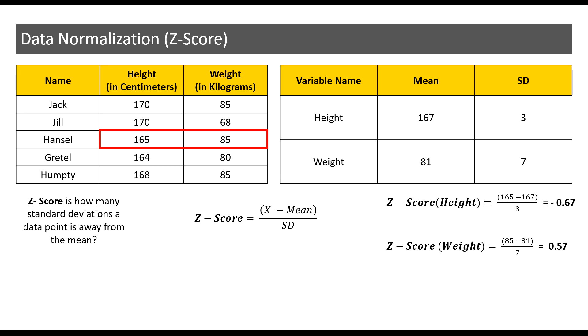This yields a Z-score of minus 0.67. This implies that Hansel's height is minus 0.67 standard deviations away from the mean.